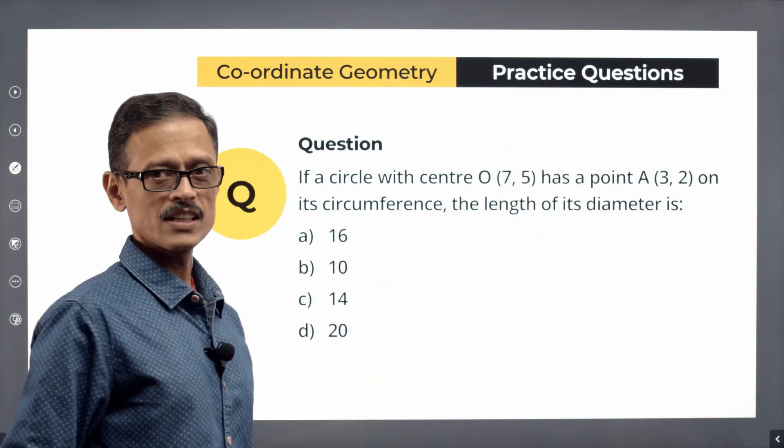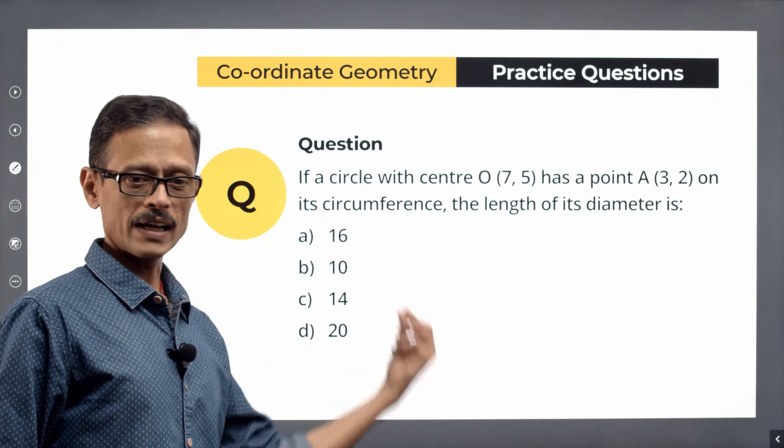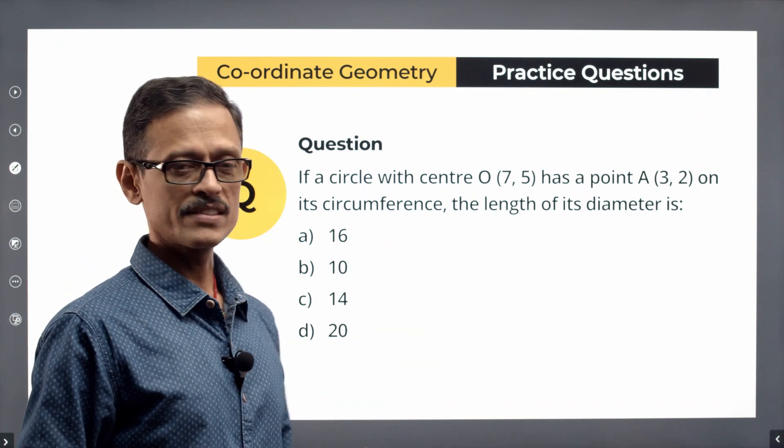The length of the diameter of the circle is what we've been asked. We've been given four answer options. Let's quickly run through it and see how it pans out.